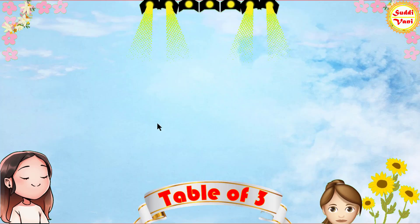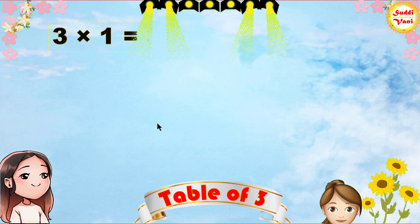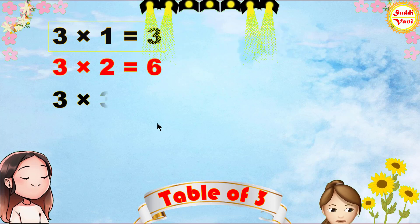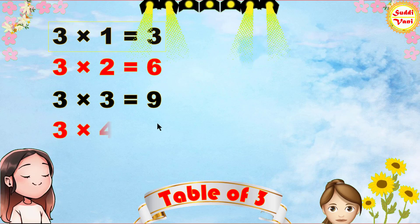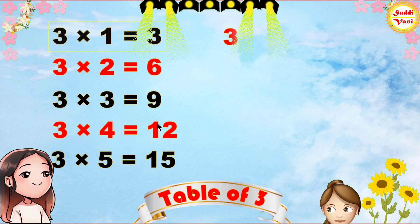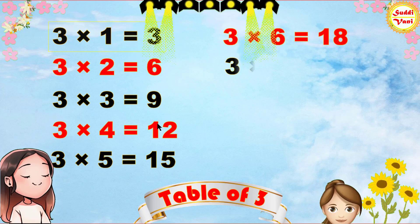Once again: 3 1s are 3, 3 2s are 6, 3 3s are 9, 3 4s are 12, 3 5s are 15, 3 6s are 18.